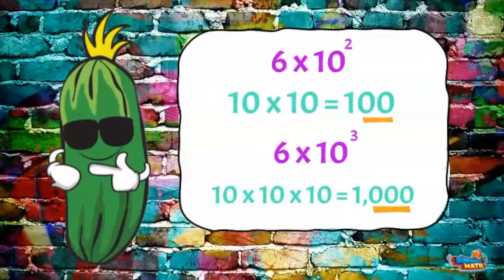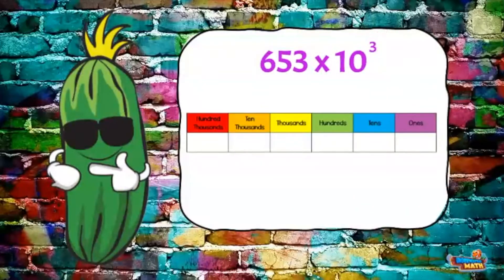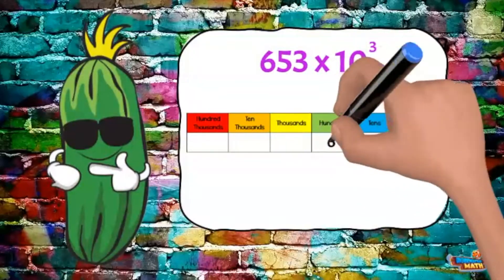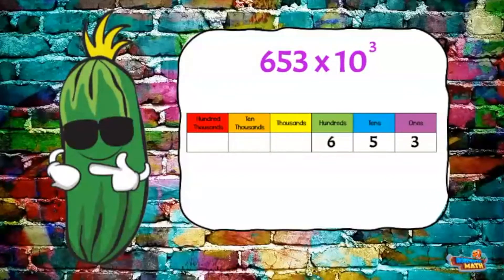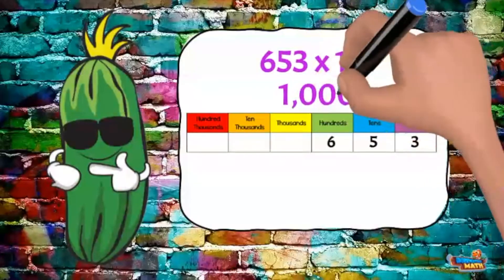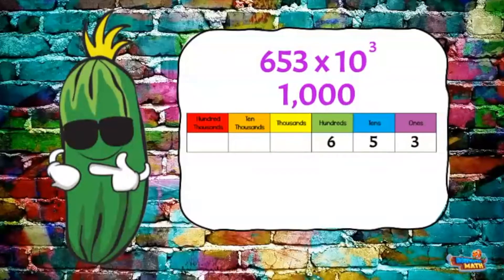So what is the value of 653 times 10 cubed? I put 653 into the place value chart. 10 cubed means I need to multiply 10 three times and get the answer of 1,000. The power of 10 has 3 zeros.